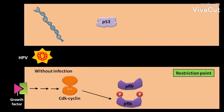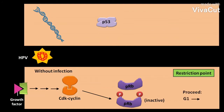As a result, the PRB becomes inactive. This inactive PRB allows the cell to proceed from G1 to S phase of the cell cycle. As a result, the cell can proliferate normally.